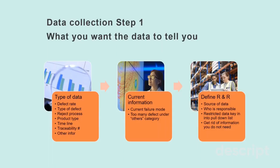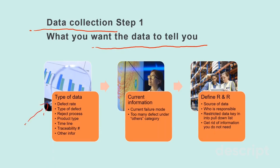Upon understanding your customer's requirement, you can craft your data collection process accordingly in the way that you want the data to tell you about insights of the process. Come with an objective of what you want the data to tell you. The first step is to understand what type of information you would like to collect — normally in a manufacturing process this would be the defect rate, the type of defect, where the defect gets rejected in the process steps, the product type, the timeline such as time and date, the traceability, and the unique part number or serial numbers of the product.